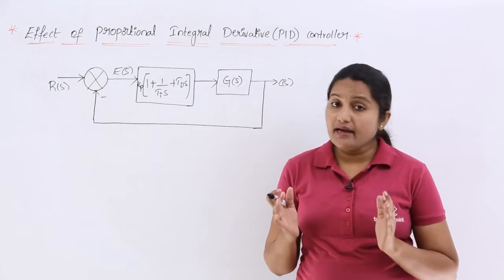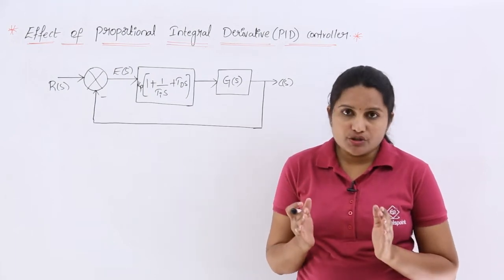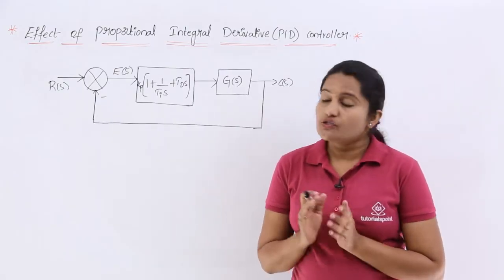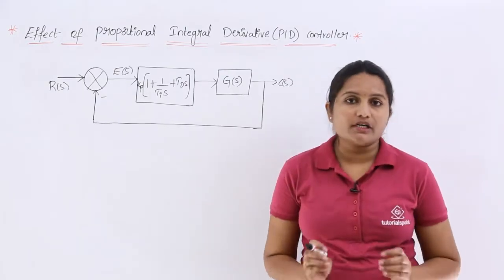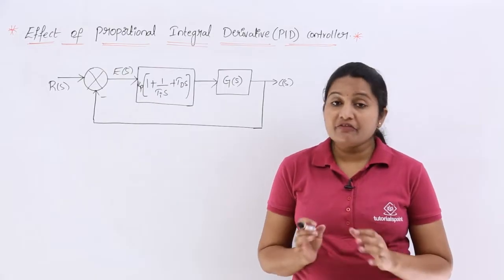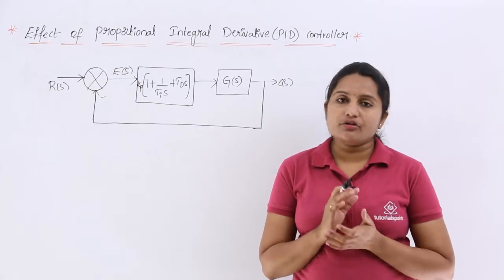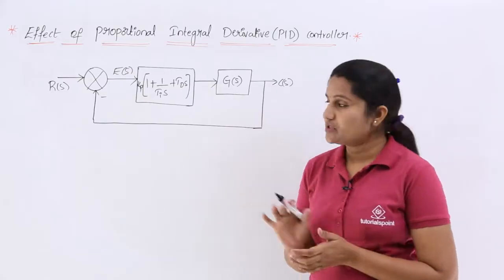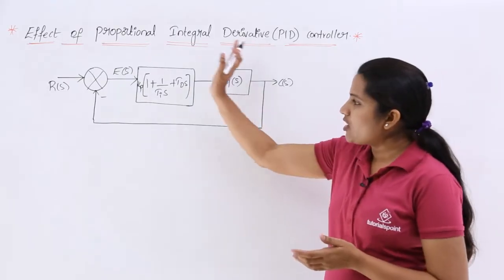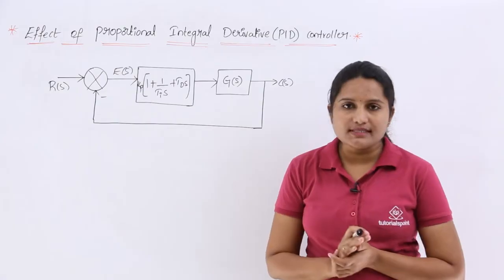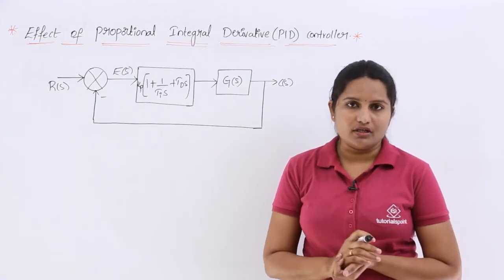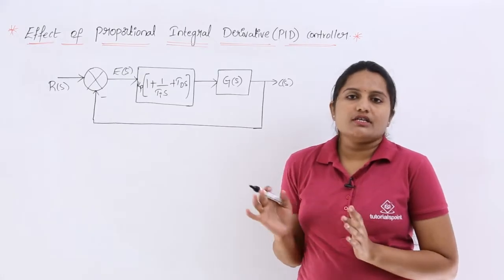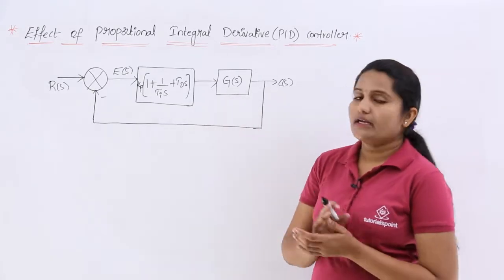So finally, the PID controller is going to increase stability and decrease the steady-state error at the same time. This is a very important and preferred controller in control systems to improve performance. Here is the block diagram of a control system using a PID controller — we already have the analysis of how to design this block diagram.